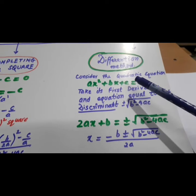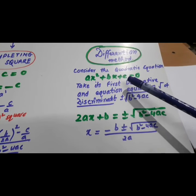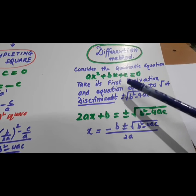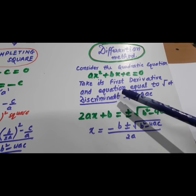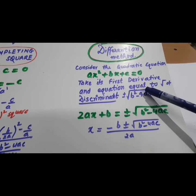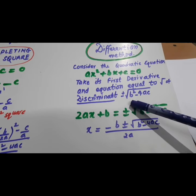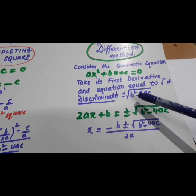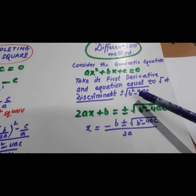And look here. Consider the quadratic equation Ax square plus Bx plus C equal to zero. Take its first derivative. And make it equal to square root of the discriminant with plus minus. That is plus minus B square minus 4AC square root.